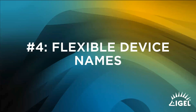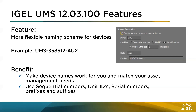The next feature is about how you can name your devices by default. We optimized the naming convention — it is now possible to use a prefix, a suffix, a sequential number, the unit ID, or even the serial number for the device name. You can also define how many characters of the serial number are used. With that, you can make device names work for you and match your asset management, flexibly naming all devices in the UMS.